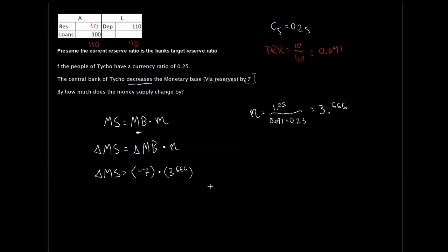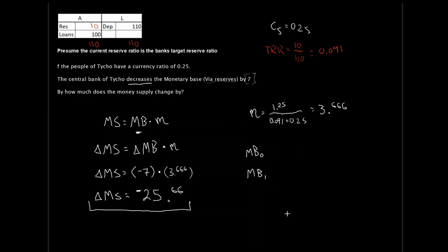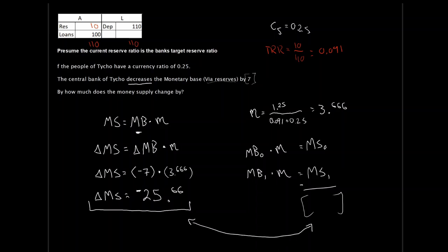So negative 7 times 3.666 yields a change in the money supply of approximately negative 25.66. To verify, we could go through the long-hand form: find the initial and final monetary bases, multiply by the multiplier to get initial and final money supplies, then work out the difference. If done correctly, both approaches should give identical results — within a reasonable degree of rounding. If they don't match, a math mistake was made and we need to go back and review.